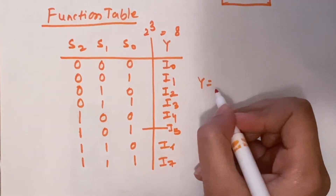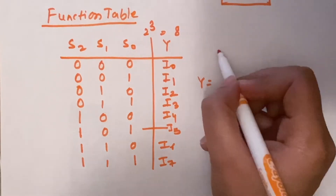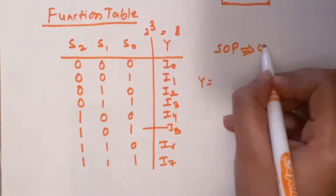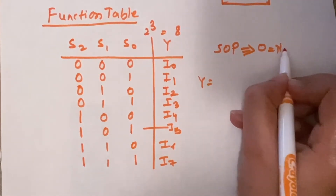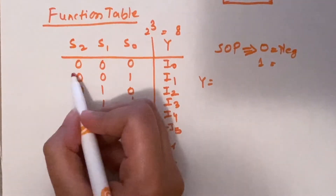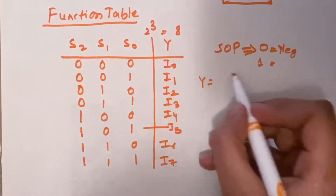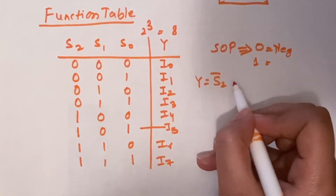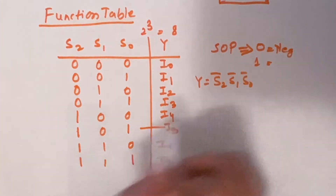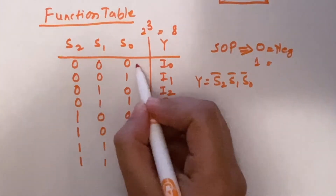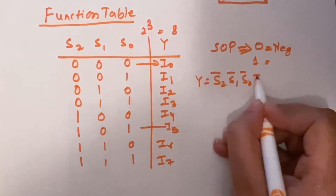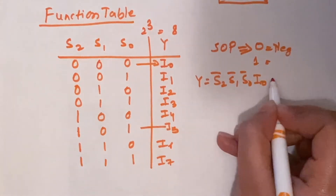We will write the expression in SOP (sum of products) form, where in sum of products a 0 is written as a negated term and 1 is written as it is. So for the first row, S2 is 0 so we write S2-bar, S1 is 0 so we write S1-bar, S0 is 0 so we write S0-bar, and the output is i0. So the first term is S2-bar · S1-bar · S0-bar · i0.